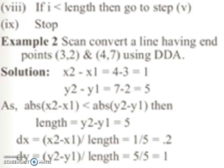Calculation of dx: dx = (x2-x1)/length. We have got x2-x1 as 1 and length as 5. So dx = 1/5 = 0.2. Calculation of dy: (y2-y1)/length. y2-y1 is 5, length is 5. So 5/5, the result is 1.